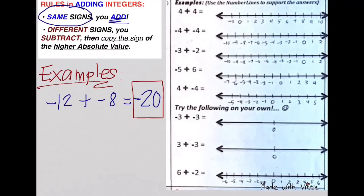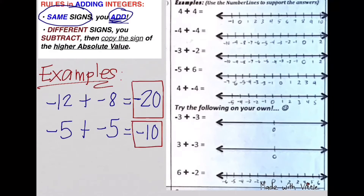Let's have another example: negative 5 plus negative 5. Are they of the same signs? Yes, they are still of the same signs. So what are we going to do? Add them. Our final answer is negative 10. You just copy the same sign.